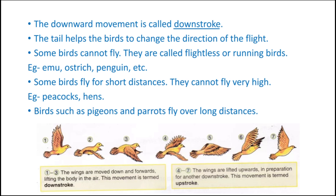Some birds cannot fly. They are called flightless or running birds. They cannot fly because their body weight is too much — their wings are smaller in size and cannot take the load of their body weight. For example, emu, ostrich, and penguin are flightless birds.